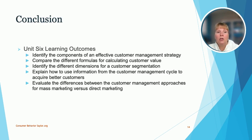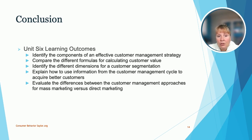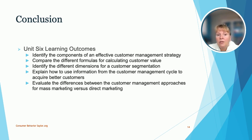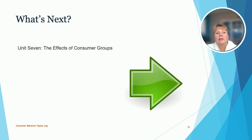In conclusion, these are the learning outcomes we covered in this presentation: components of an effective customer management strategy, the different formulas for calculating customer value, the dimensions for customer segmentation, the customer management cycle to acquire better customers, and the differences between customer management approaches for mass marketing versus direct marketing. Unit 7 is on the effects of consumer groups. My name is Dr. Marci Stone — thank you for listening.